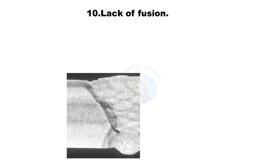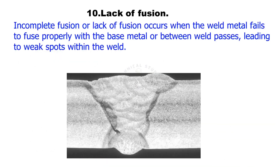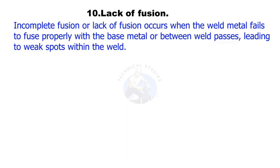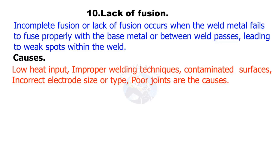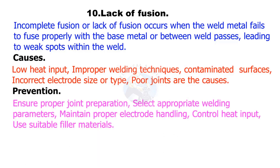Lack of fusion, or incomplete fusion, occurs when the weld metal fails to fuse properly with the base metal or between weld passes, leading to weak spots within the weld. Causes include low heat input, improper welding techniques, contaminated surfaces, incorrect electrode size or type, and poor joint preparation. Prevention: ensure proper joint preparation, select appropriate welding parameters, maintain proper electrode handling, control heat input, and use suitable filler materials.